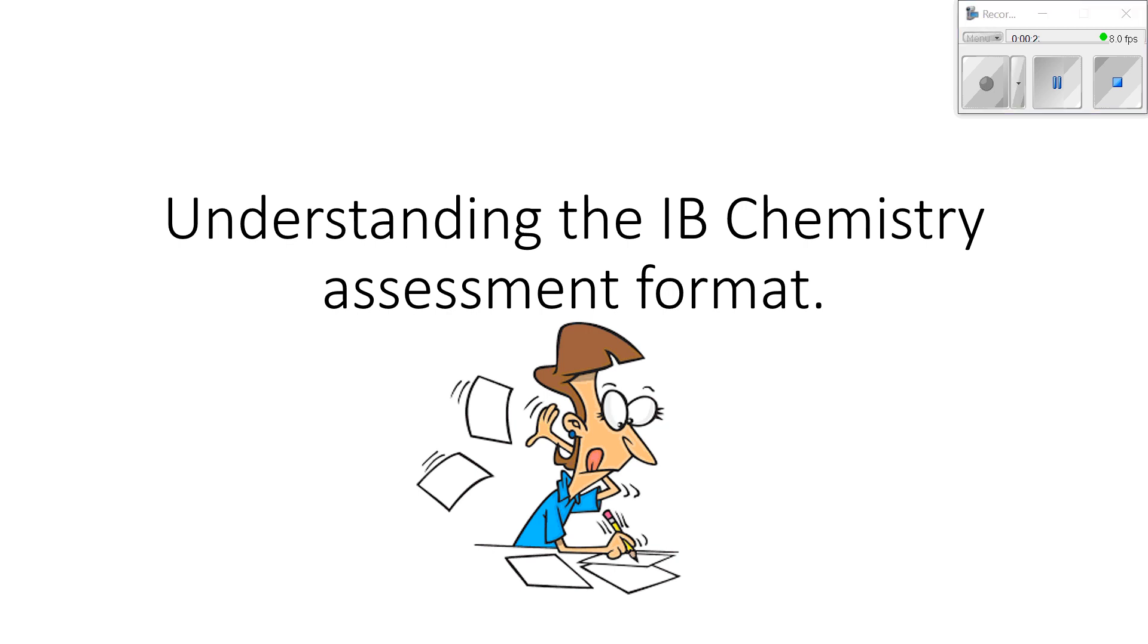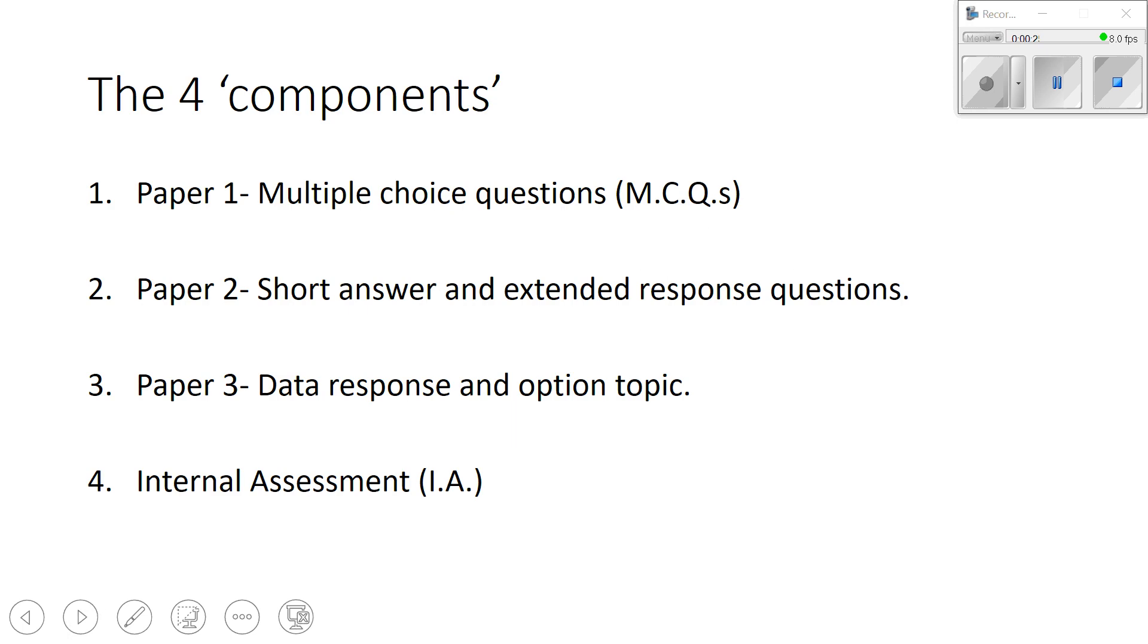So the first slide here we have is we're talking about the four components. And the IB are notorious for using tricky language to explain simple things. In this case, the component is referring to the four parts that you'll be assessed on for your IB chemistry exam. The first part being paper one, which is going to be multiple choice questions, which I've abbreviated to MCQ. And I refer to these as MCQs from now on. And it varies from standard level to higher level.